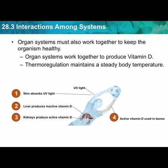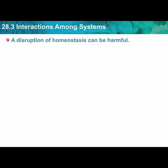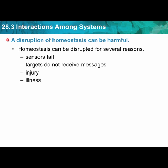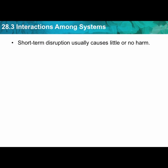This is again a feedback mechanism. A disruption of homeostasis can be harmful and can be disrupted for several reasons. Sensors may fail — you're not able to detect temperature in your skin. Targets may not receive the message: sensors send the message, but because of nerve damage or something similar, the target is not getting it.